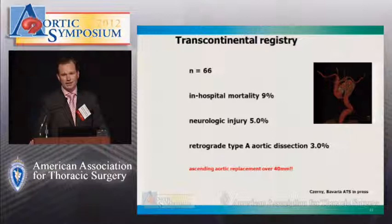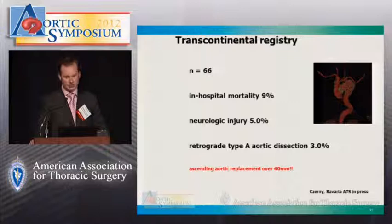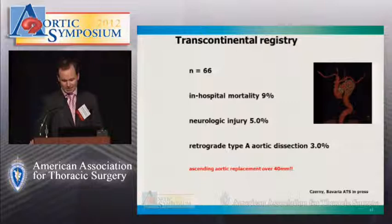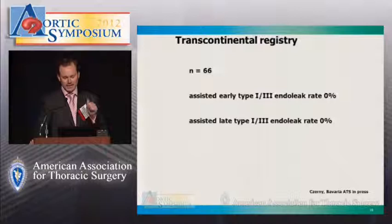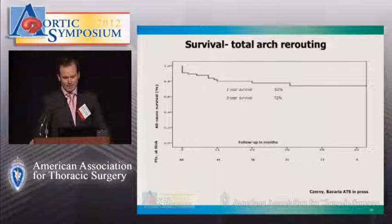To investigate further, we formed a transcontinental registry with five participating centers, including 66 patients. We observed an in-hospital mortality of 9%, a low rate of neurologic injury, and a lower rate of retrograde type A dissection. We believe this improvement was due to our altered approach of replacing the ascending aorta when its diameter exceeded 40 mm in our setting, and 37 mm in other centers. Assisted early endoleak rate — not primary endoleak rate, but assisted rate including sealing by watchful waiting, re-ballooning, or TEVAR extension — was excellent.